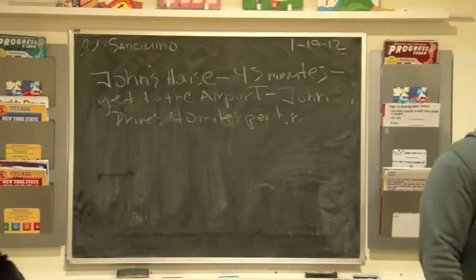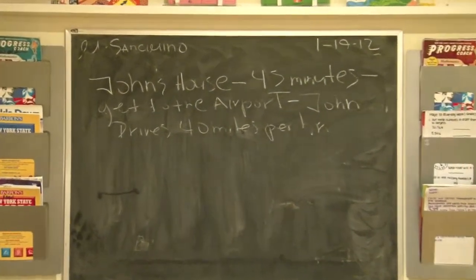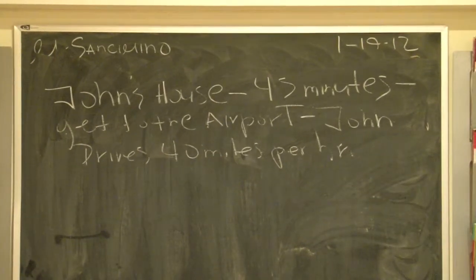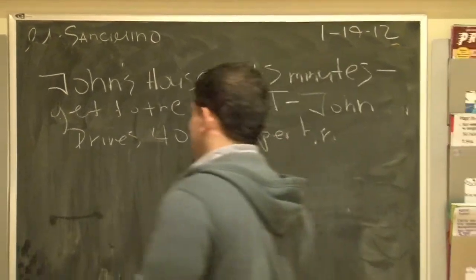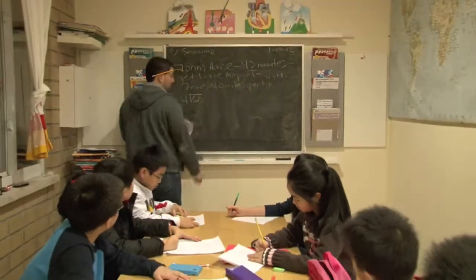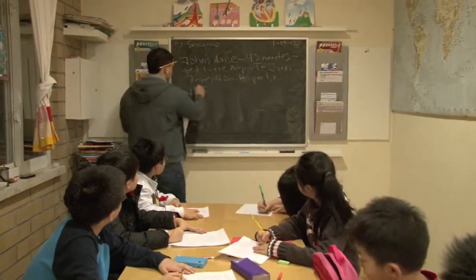Okay, how far is the airport from his house? Okay, what do you got? 30 miles. Okay, how did you figure it out? Because since 60 can be divided by four. Hold on, hold on a second. 60 can be divided by four, what's that? 15. 15, okay.